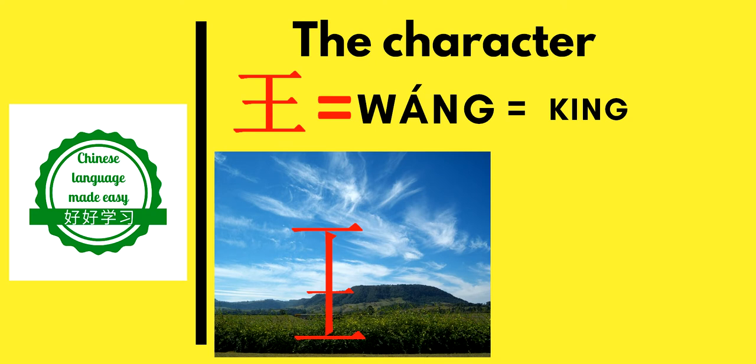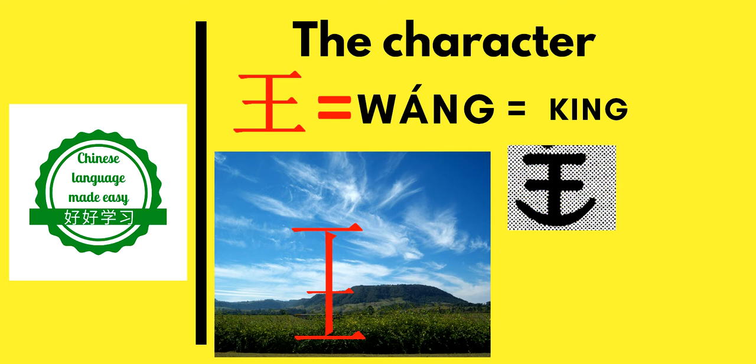Another interpretation dates back to the Shang dynasty: 王 (wáng) could represent a heavy axe, a weapon used by slave owners or feudal lords to kill servants, prisoners, or criminals. Anyone who had mastered this murderous weapon would have the power of a king, so the axe symbolized kingly power.